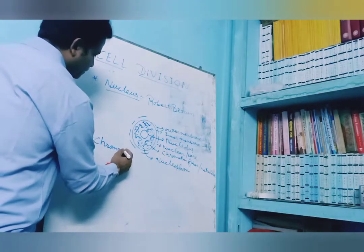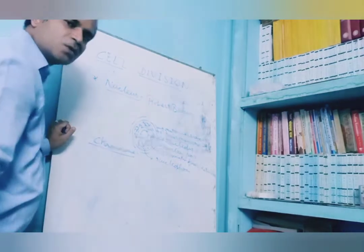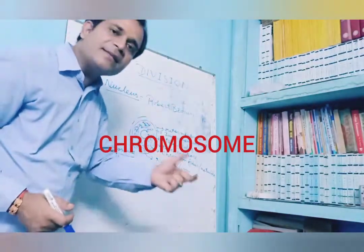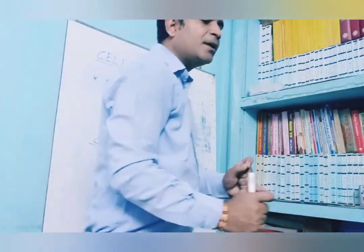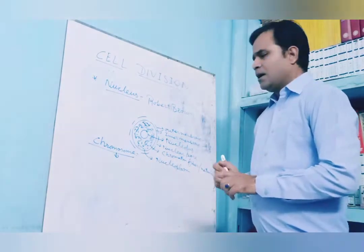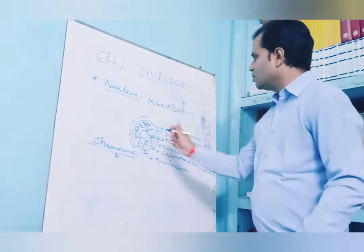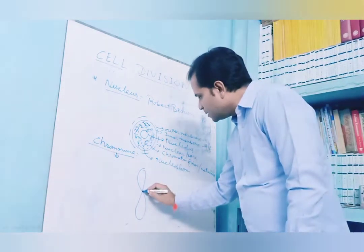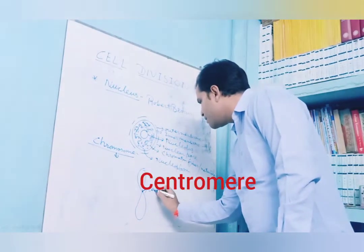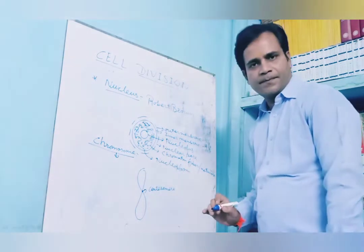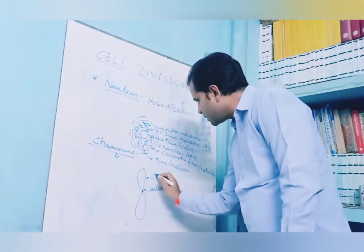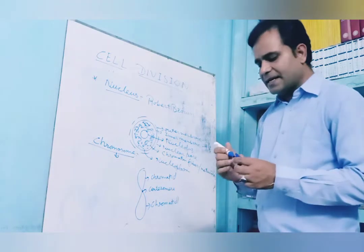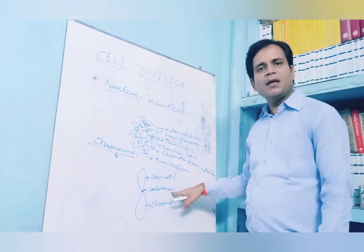The term chromosome is derived from the Latin words 'chroma' plus 'soma.' A chromosome is a condensed part of chromatin fiber that forms during cell division. It has a ribbon-like shape and two chromatids are attached at a point called the centromere.